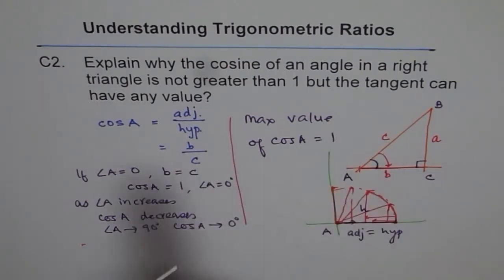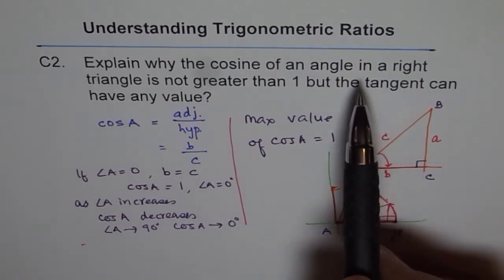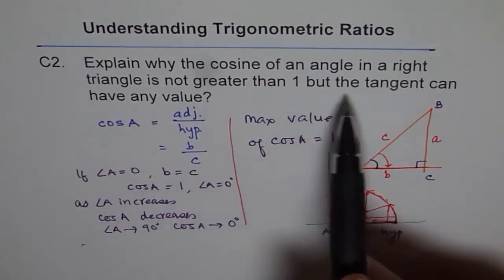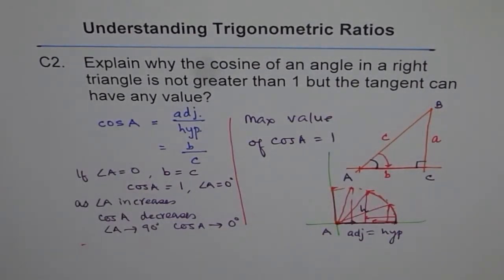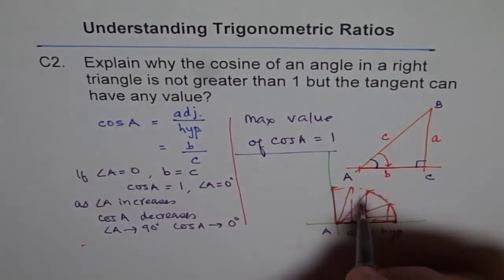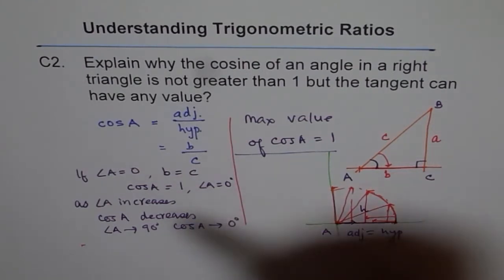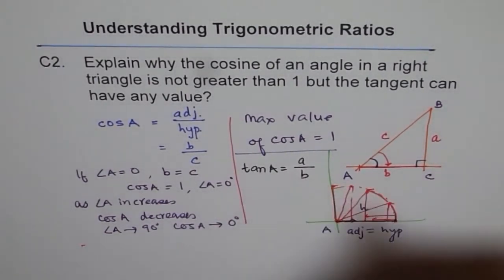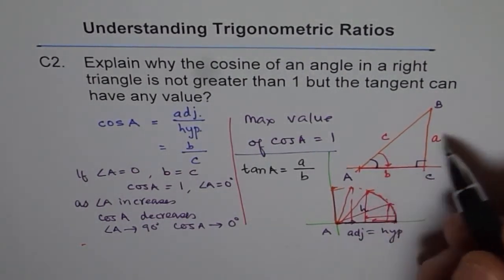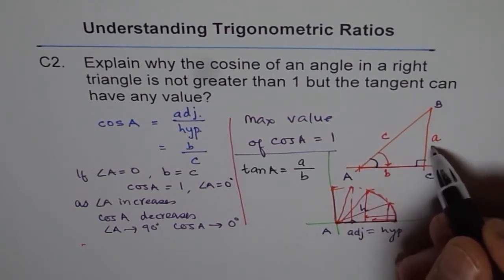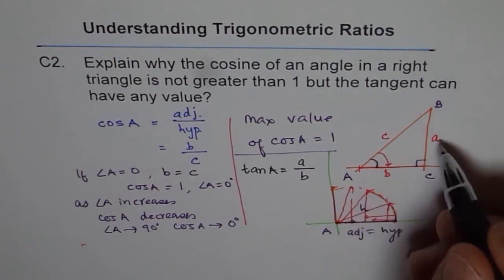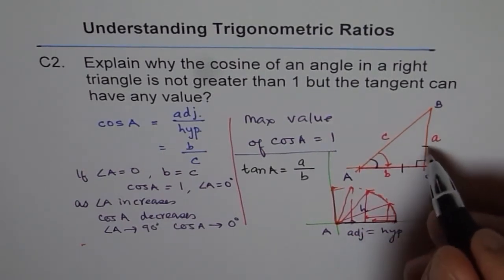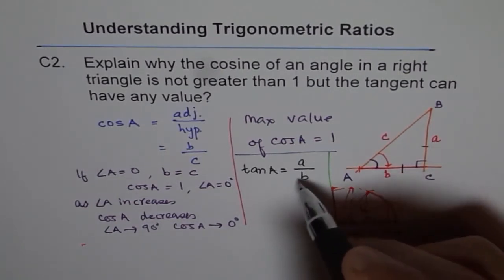Now let's talk about tangent. The question also asks why the tangent can have any value. What is tan A? Tan A is opposite over adjacent — it's the ratio of two sides. Here, either side could be bigger. If the angle is small, side a will be smaller. If the angle is larger than 45 degrees, side a will be larger than side b. If the angle is exactly 45 degrees, it's an isosceles triangle and a equals b, so tan A equals 1.